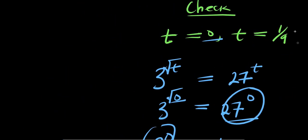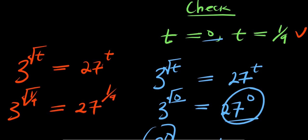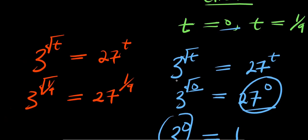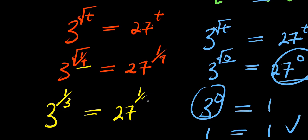Now let's check t equals 1 over 9. We have 3 power square root of (1 over 9) equals 27 power (1 over 9). The square root of 1 over 9 is 1 over 3, since square root of 1 is 1 and square root of 9 is 3. So we have 3 power (1 over 3) equals 27 power (1 over 9).